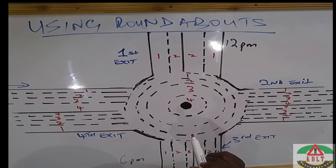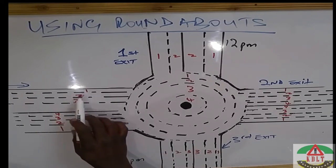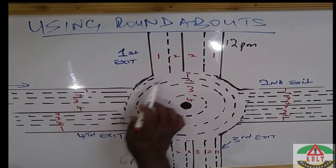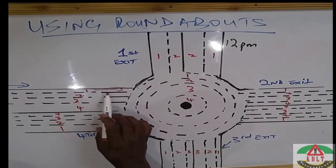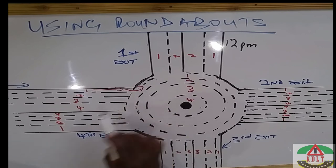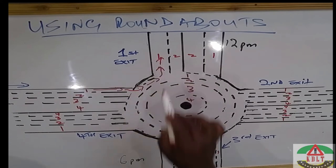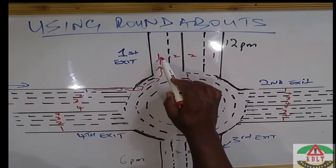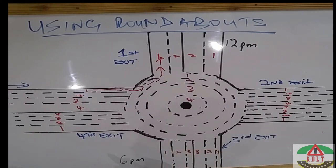Let us look at how you're supposed to use your indicators when negotiating a roundabout. If you're going to use your first exit, you will approach the roundabout on lane number one and exit on lane number one. When you're about to enter the roundabout, you will start indicating your left indicator. Get inside the roundabout while still indicating, exit on lane number one, and immediately after you exit the roundabout, make sure your indicator goes off. If it doesn't go off automatically, switch it off. That is exit number one.